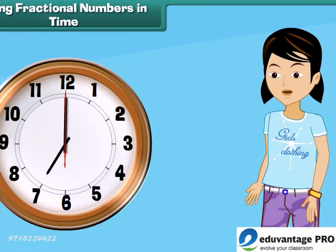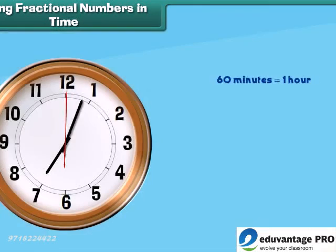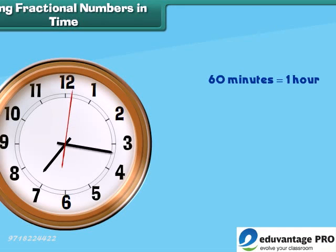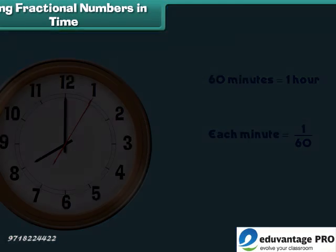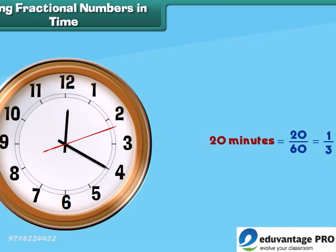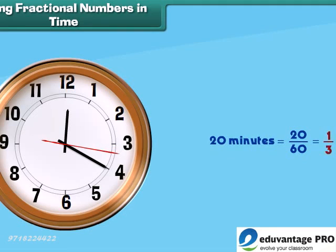Can we divide time into fractions? Yes! Look at this clock. The hours would be the whole numbers and the minutes would be the fractions. Since there are sixty minutes in an hour, each minute is one by sixty. You can say twenty minutes would be equal to twenty divided by sixty, and it will be equal to one third.